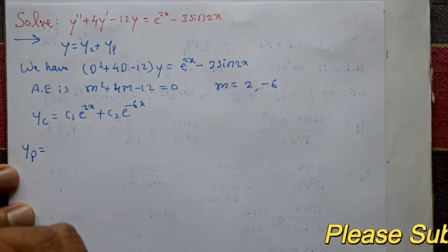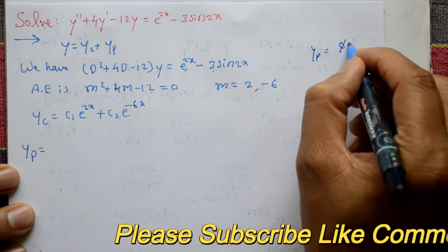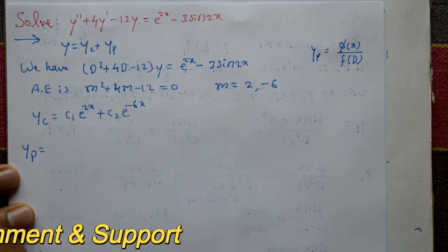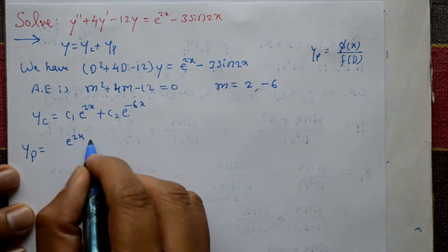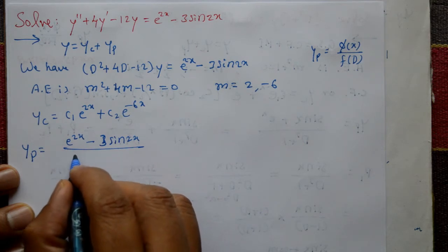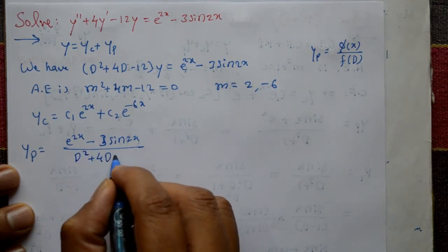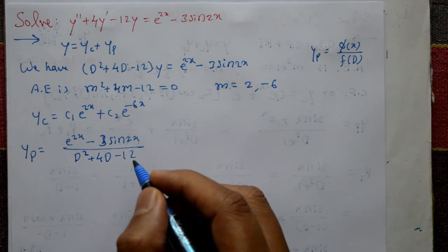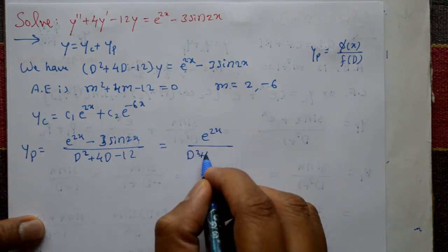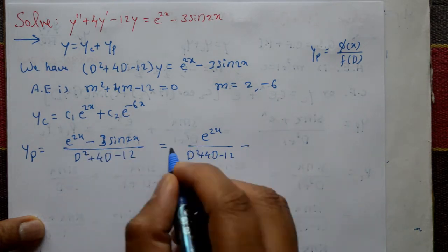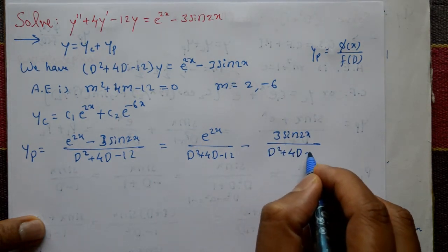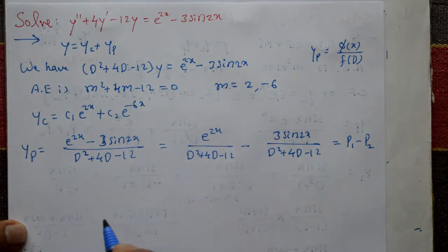Now go to the particular integral. yp = φ(x) / f(D), where φ(x) is the right-hand side and f(D) = D² + 4D - 12. The right-hand side e^(2x-3) · sin(2x) is separated into two terms: P1 = e^(2x) / (D² + 4D - 12) minus P2 = 3·sin(2x) / (D² + 4D - 12).